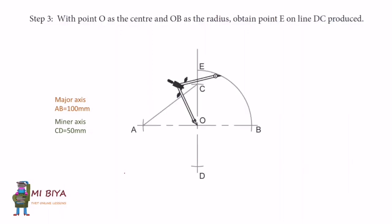In Step 3, with point O as the center and OB as the radius, obtain point E on line DC. You need to stretch your compass from O up to point B, then draw an arc up to point E. We are done with this step.